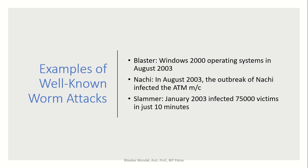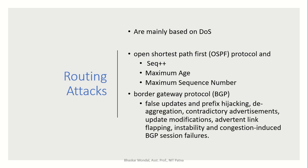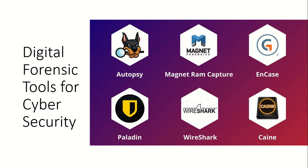Routing attacks are based on how packets travel over the network. Protocols such as OSPF (Open Shortest Path First) and BGP (Border Gateway Protocol) can be affected by routing attacks.